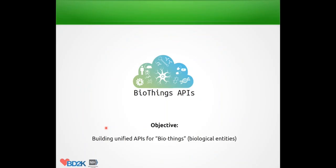For the BioThings API, it has come out of the mygene.info and myvariant.info projects. The objective for us is to try to build unified APIs for any kind of BioThings — meaning any biological entities — because we think the underlying technology infrastructure we built for mygene and myvariant is suitable to extend to cover other biological entities. That's our overall goal.